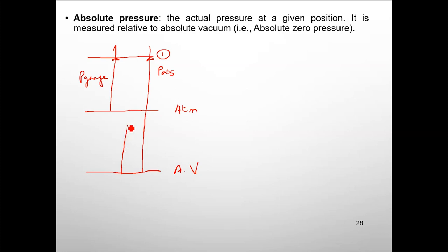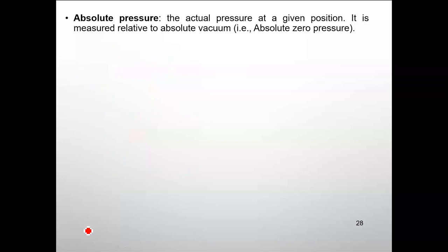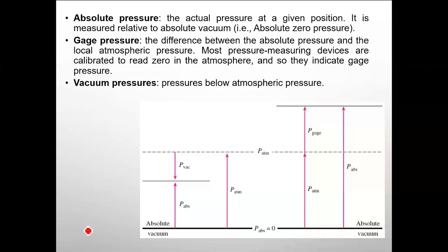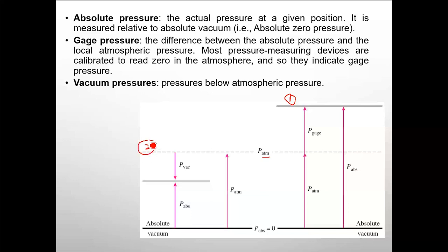The third pressure is from absolute vacuum to the atmosphere, known as atmospheric pressure, P_ATM. Another condition is where pressure at a given location is less than the atmospheric pressure — meaning there is a vacuum condition. The pressure difference between atmosphere and that location is the vacuum pressure.